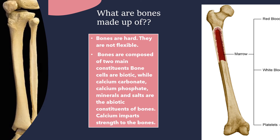Bones are composed of two main constituents. Bone cells are biotic, while calcium carbonate, calcium phosphate, minerals, and salts are the abiotic constituents of the bone. So bones have both biotic and abiotic components.